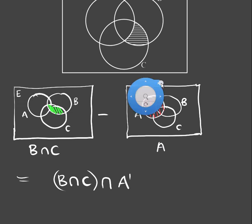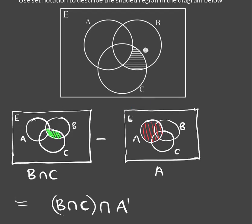As you get more comfortable with sets, you notice that whenever we have a minus sign, we have an intersection with the complement of the set on the right-hand side. You can realize that minus just means intersection with the complement. So if I find this question quickly: the shaded part looks like B intersection C, and from B intersection C we're removing A — immediately I know it's intersection A complement. Union means we're putting things together and adding them.